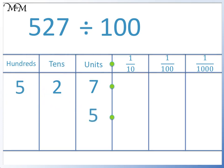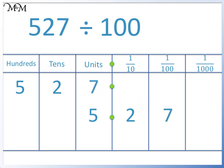We move the 5 to the units column. The next two digits follow. We move the 2 to the tenths column, and we move the 7 to the hundredths column. We have 5.27. So 527 divided by 100 equals 5.27.